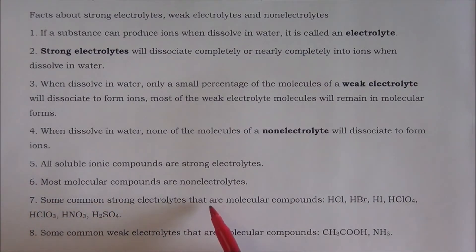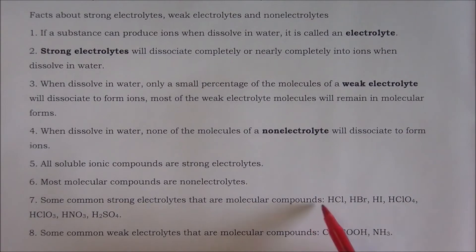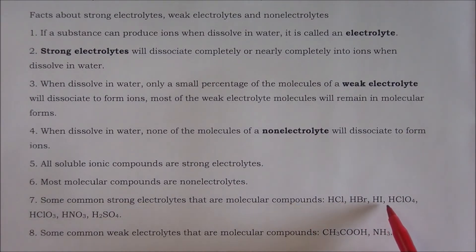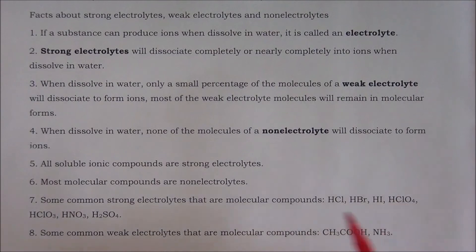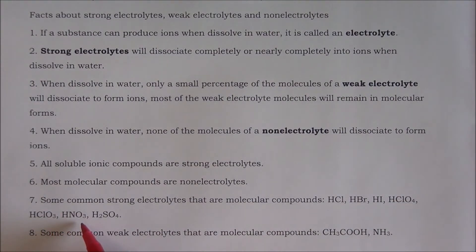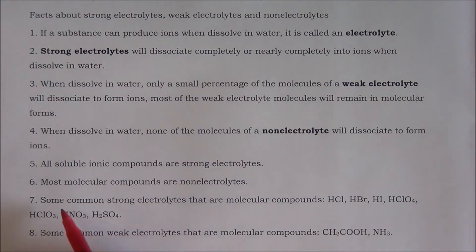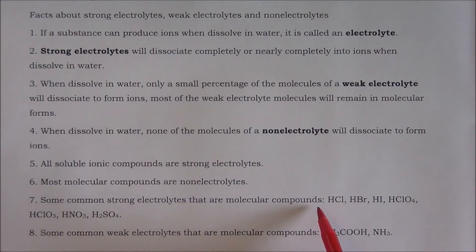Number seven — some common strong electrolytes that are molecular compounds: hydrochloric acid, hydrobromic acid, hydroiodic acid, perchloric acid, chloric acid, nitric acid, and sulfuric acid. As we can see here, the common strong electrolytes that are molecular compounds are strong acids.